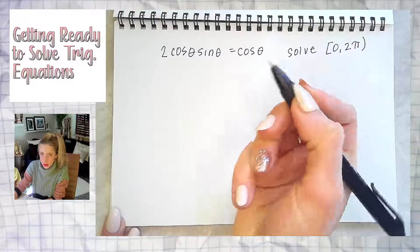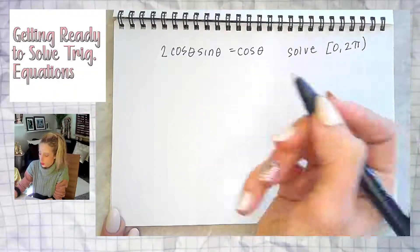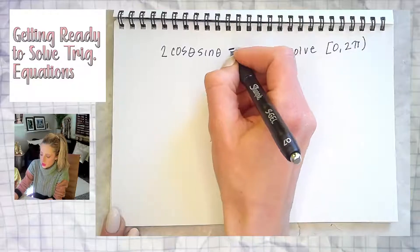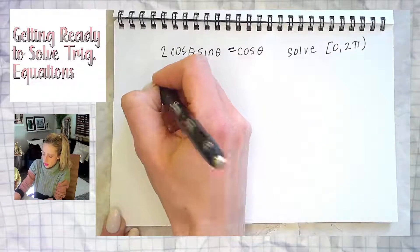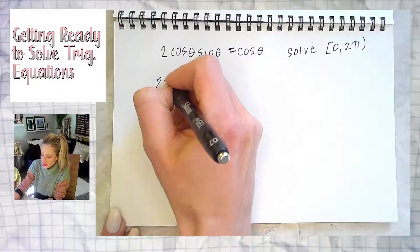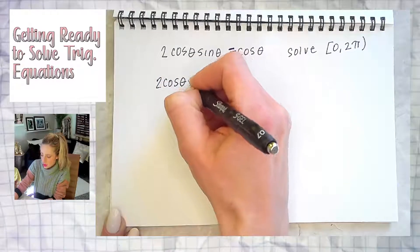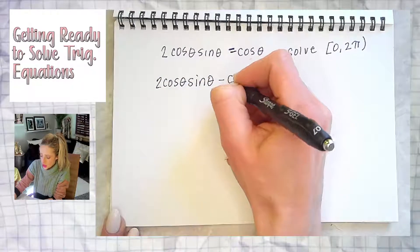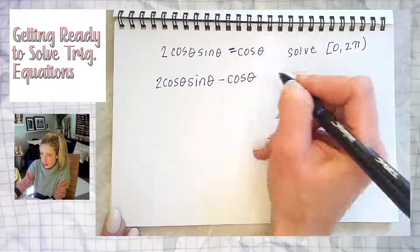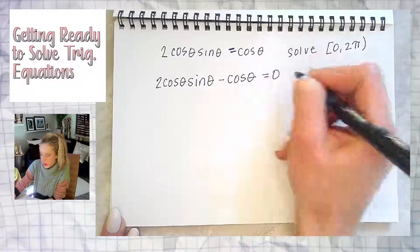This is similar to a factoring example when you solved polynomial equations, so we want to get it equal to zero. We'll do that by subtracting cosine from both sides. It does not impact the two cosine theta sine theta at all. It just gets written next to it. They are not like terms. It equals zero.